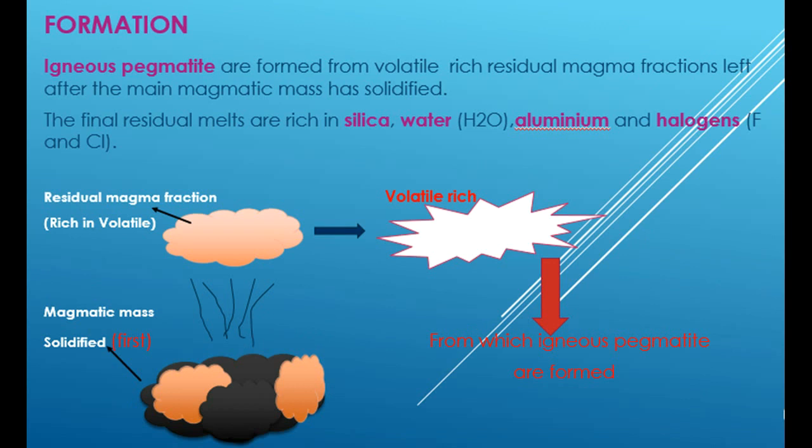The final residual melts are rich in silica, water (H2O), aluminium, and halogens — F and Cl. Please look at this diagram so that you can understand very well.